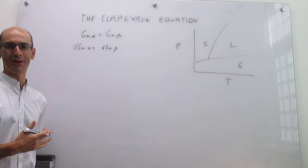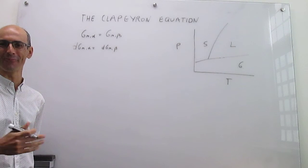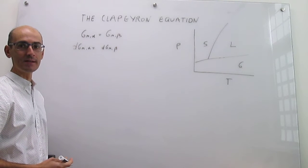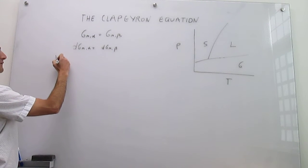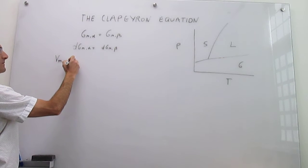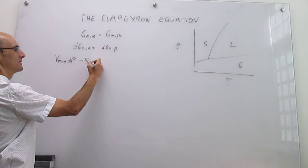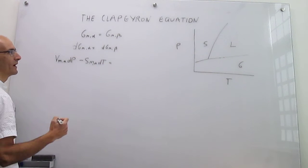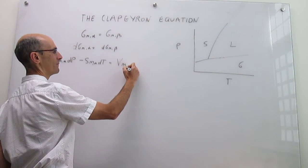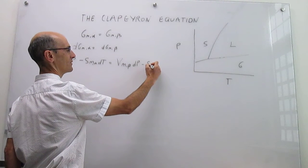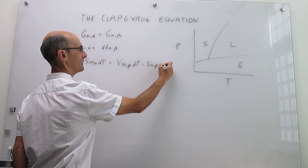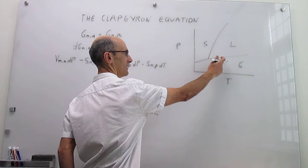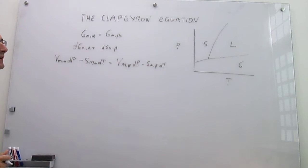Now we use our knowledge of how the molar Gibbs energy changes with pressure and temperature, and unfold this molar Gibbs energy into its dependence on pressure and temperature. The dependence on pressure is the molar volume, and on temperature is the molar entropy. The same applies for the other phase: the molar volume of the beta phase multiplied by the change in pressure, minus the molar entropy of the beta phase multiplied by the change in temperature.